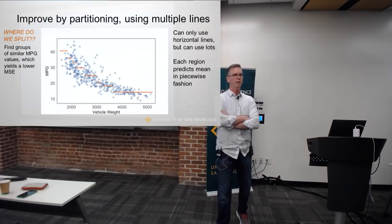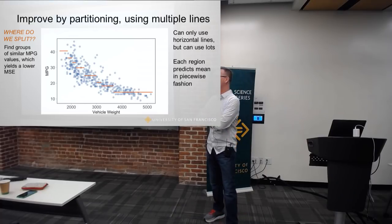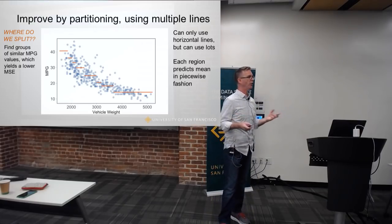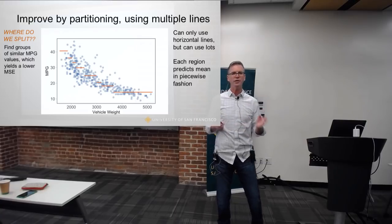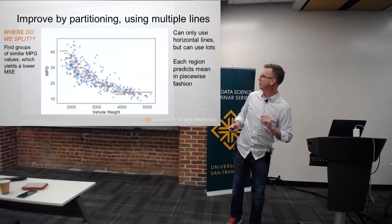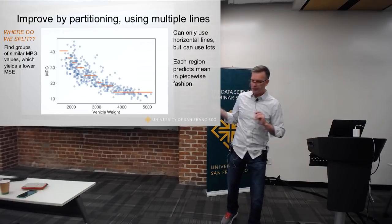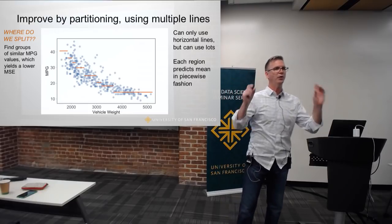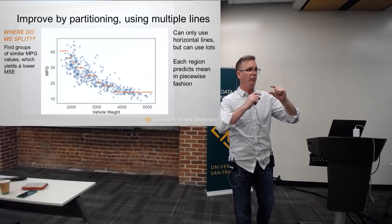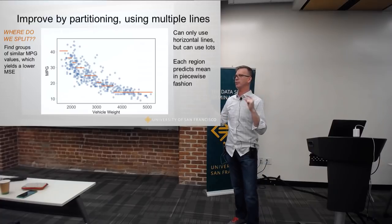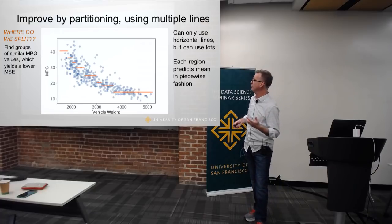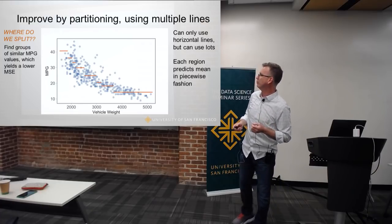If I'm willing to take a piecewise approach, I can produce a much more impressive approximation. I'm allowed to use multiple lines, still horizontal — I'm just partitioning the feature space. The feature space here is vehicle weight, which I'm using to predict miles per gallon. I'm partitioning feature space into regions of similar target values, finding regions where the miles per gallon are very similar, so that when I approximate them with a mean I get a very close approximation. I can make a whole bunch of these partitions and get a reasonable piecewise approximation.